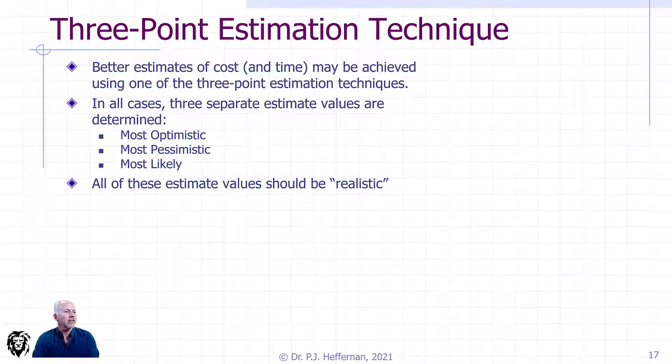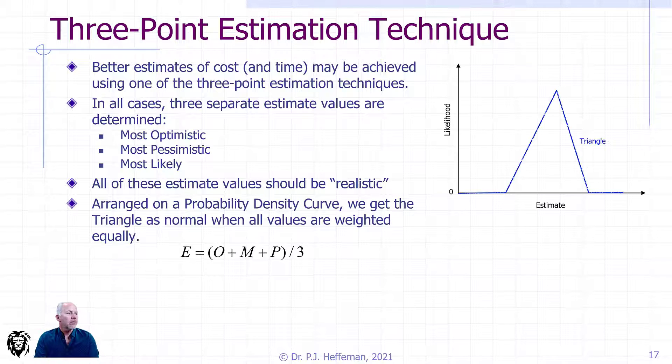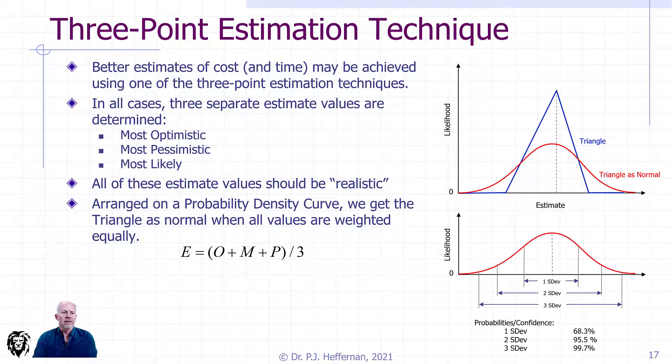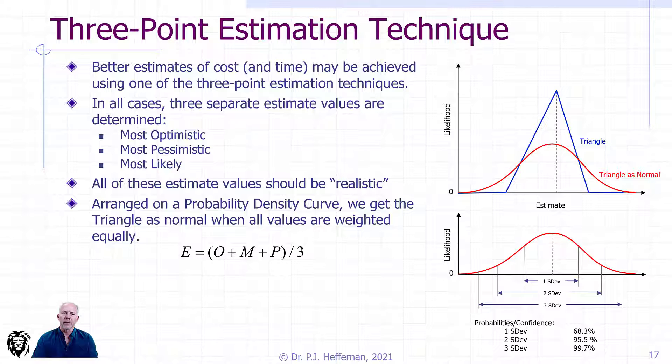All of these estimate values should be realistic. The typical three-point triangle as normal method has our optimistic, pessimistic, and most likely, and they're all weighted exactly the same. It can be estimated as a triangle as normal. I don't see that as often where we're going to go into deep probabilities. If we're going to need that kind of fidelity, we're probably going to go with this next technique, which is the PERT technique.